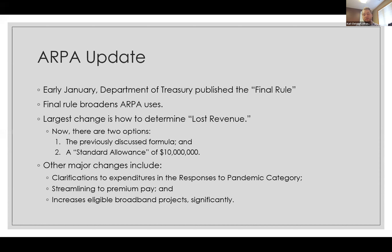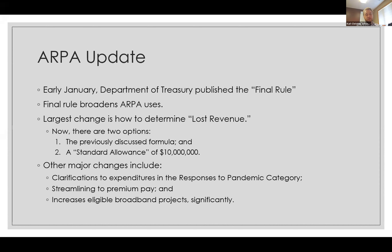There are a couple of documents we have to be aware of when discussing the American Rescue Plan Act. First, there is the bill passed into law by Congress and signed by the President — the American Rescue Plan Act. In that law, we are provided essentially four spending categories: responses to the pandemic and negative economic impacts, premium pay to essential workers, lost revenue replacement, and investments into water, sewer, and broadband.